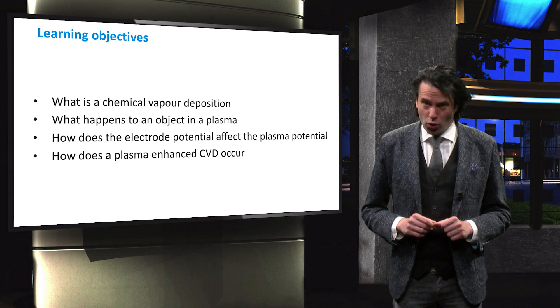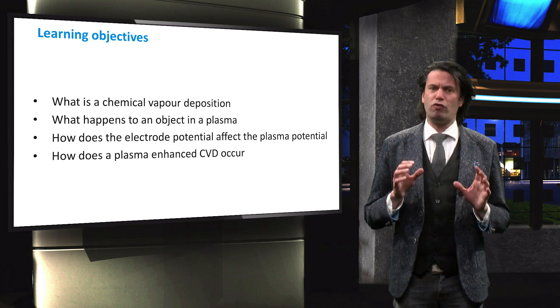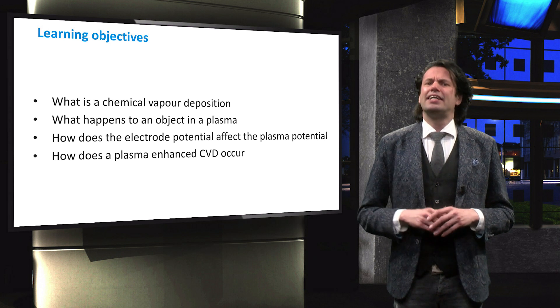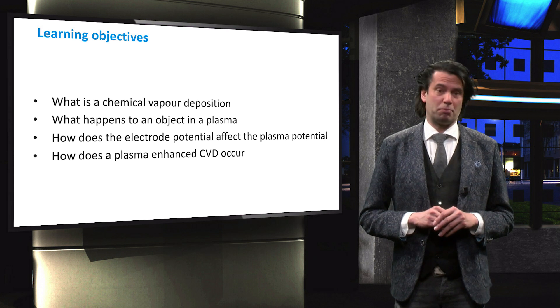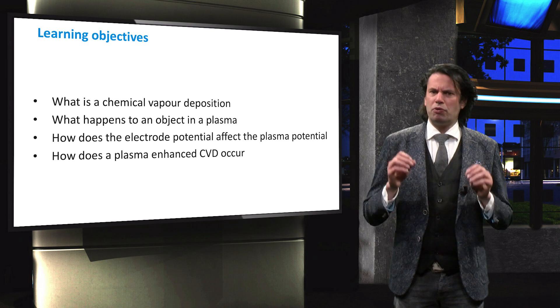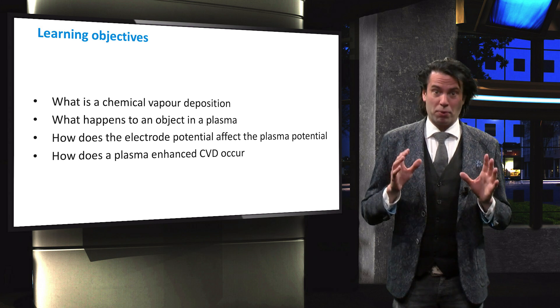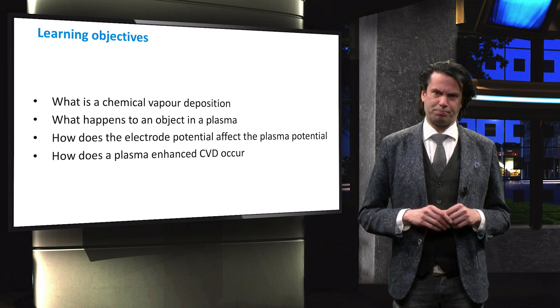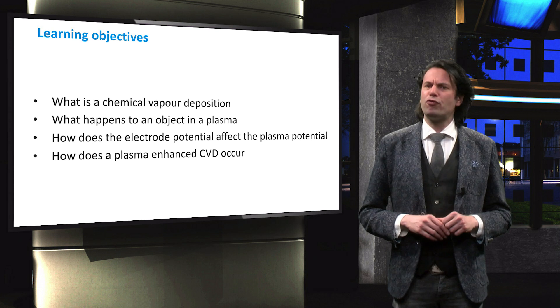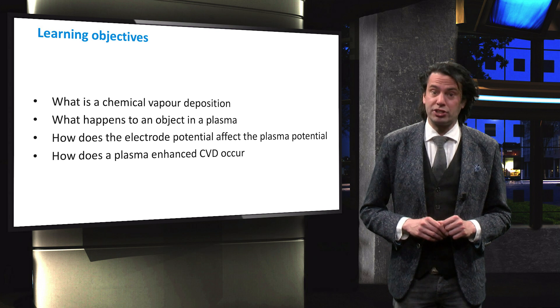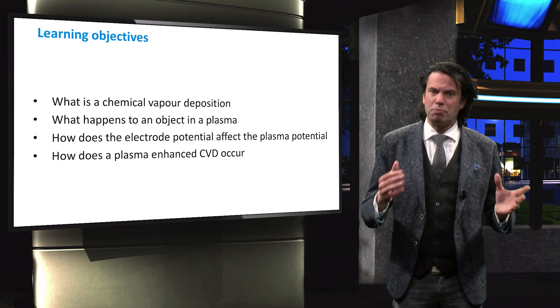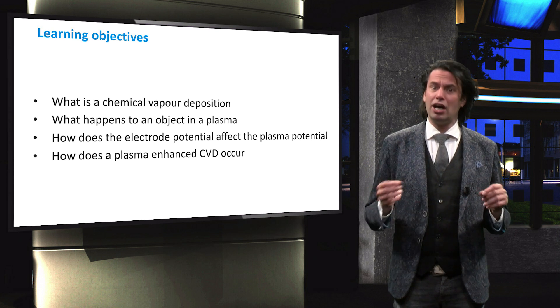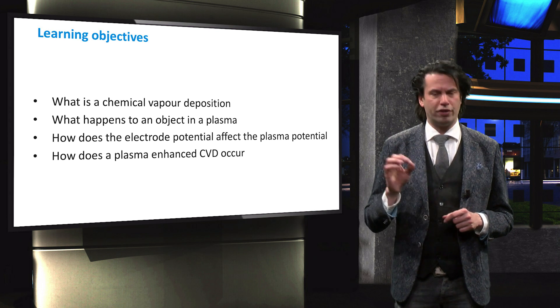In this two-part video we will discuss chemical vapor deposition, or CVD, and in particular the plasma enhanced chemical vapor deposition. We will therefore discuss what a plasma is, and what happens to an object in a plasma. We will look at the influence of the electrode potential and the potential in the plasma, and finally we will discuss how the plasma behavior leads to the deposition of a thin film.